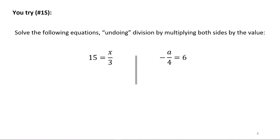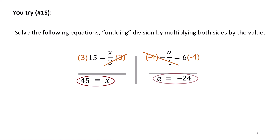In solving division equations, we multiply both sides by the value. The typical way to show this is using a number in parentheses, which means multiplication. The inverse operation of dividing by 3 is multiplying both sides by 3. We cancel the 3s on the right side; on the left we have 3 times 15, which is 45, the final value of x. In the second equation, negative 4 is undone by multiplying both sides by negative 4, giving a equals negative 24.